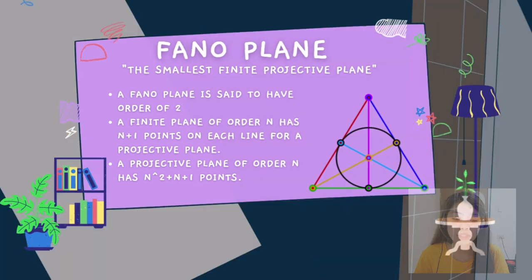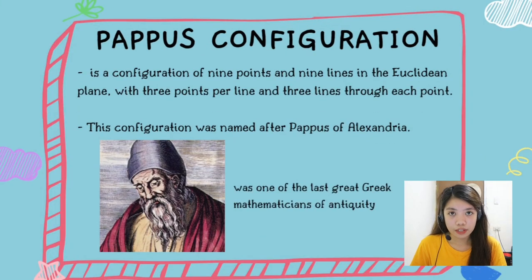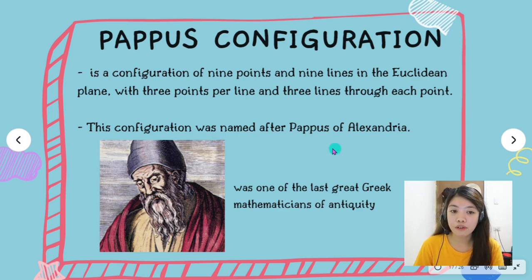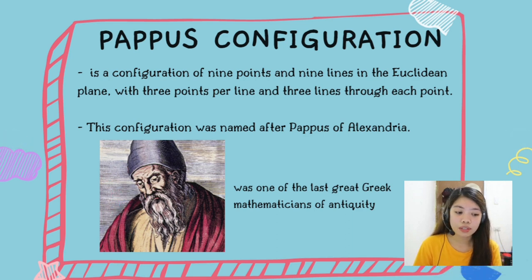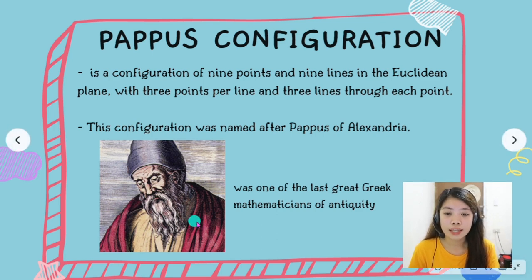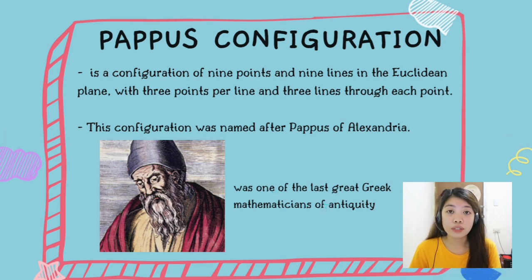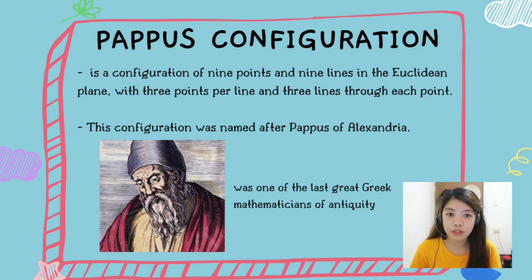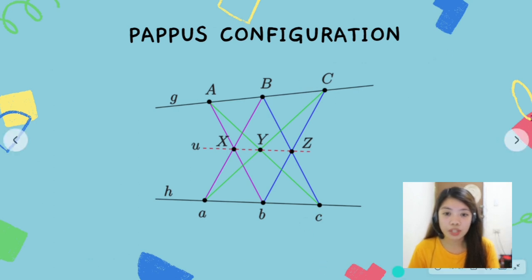Now let us proceed to the second configuration which is the Pappus configuration. The Pappus configuration is a configuration of 9 points and 9 lines in the Euclidean plane, with 3 points per line and 3 lines through each point. It was named after Pappus of Alexandria, who lived around 300 CE and was one of the last great Greek mathematicians of antiquity. Pappus wrote a volume called Collection consisting of 8 books, but only 7 survived. Written in one of his books is the Pappus configuration, or Pappus theorem.